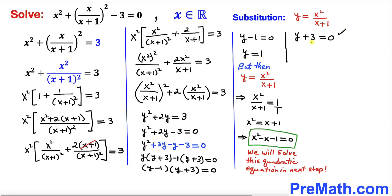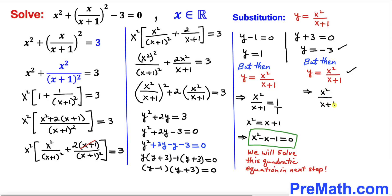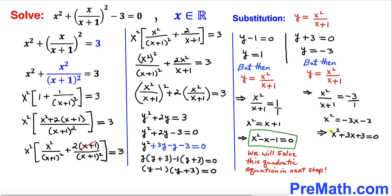For the equation y + 3 = 0, we get y = −3. Substituting back, x²/(x+1) = −3. Cross-multiplying gives another quadratic equation: x² + 3x + 3 = 0. We will now solve both quadratic equations.